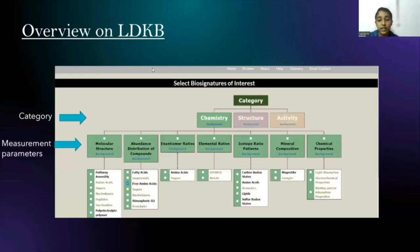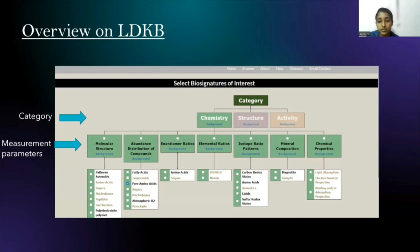In LDKB, biosignatures are categorized under three categories: chemistry, structure, and activity. I worked in the chemistry section, and more specifically, I chose my topic under the abundance distribution of amino acids.